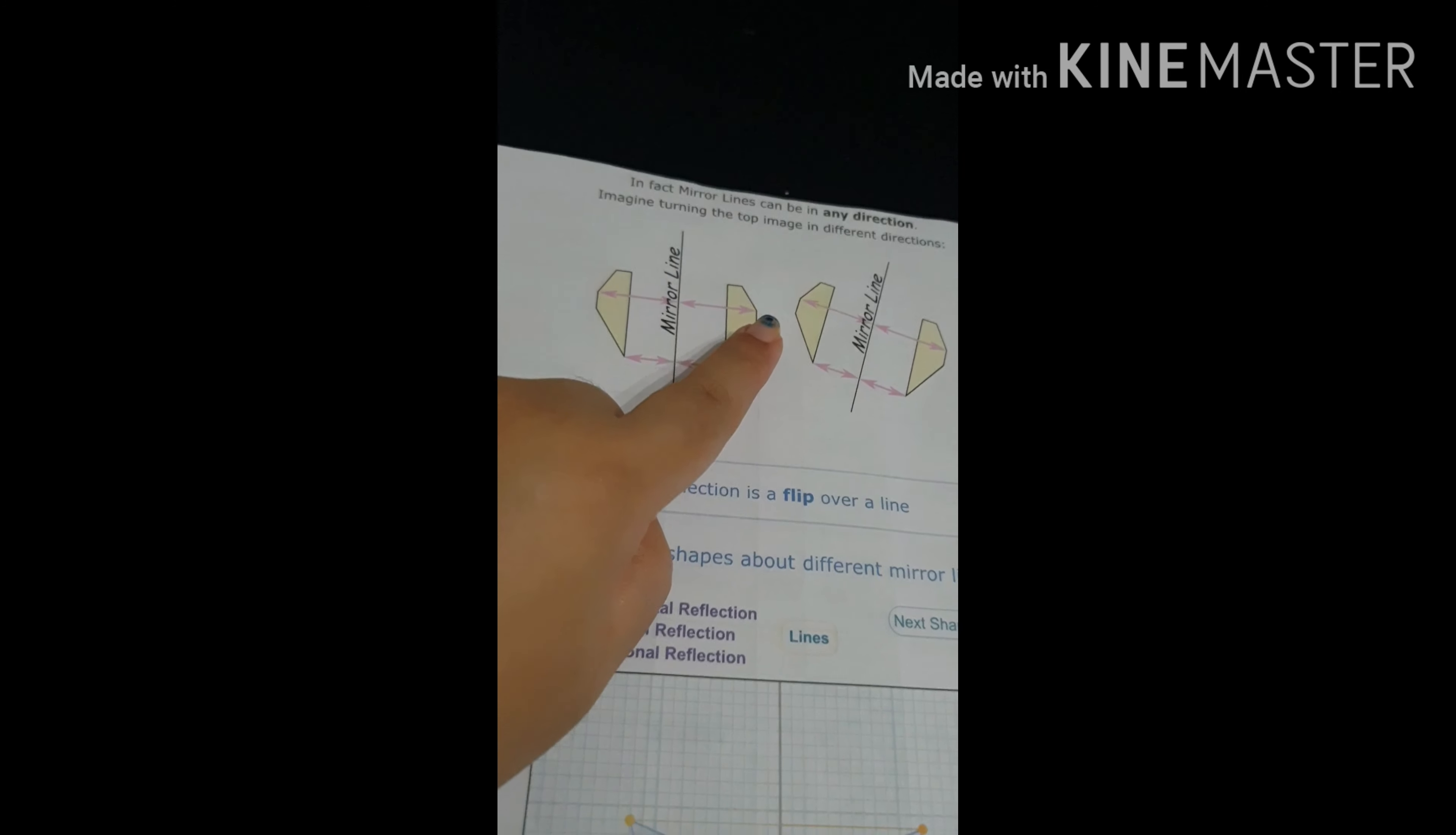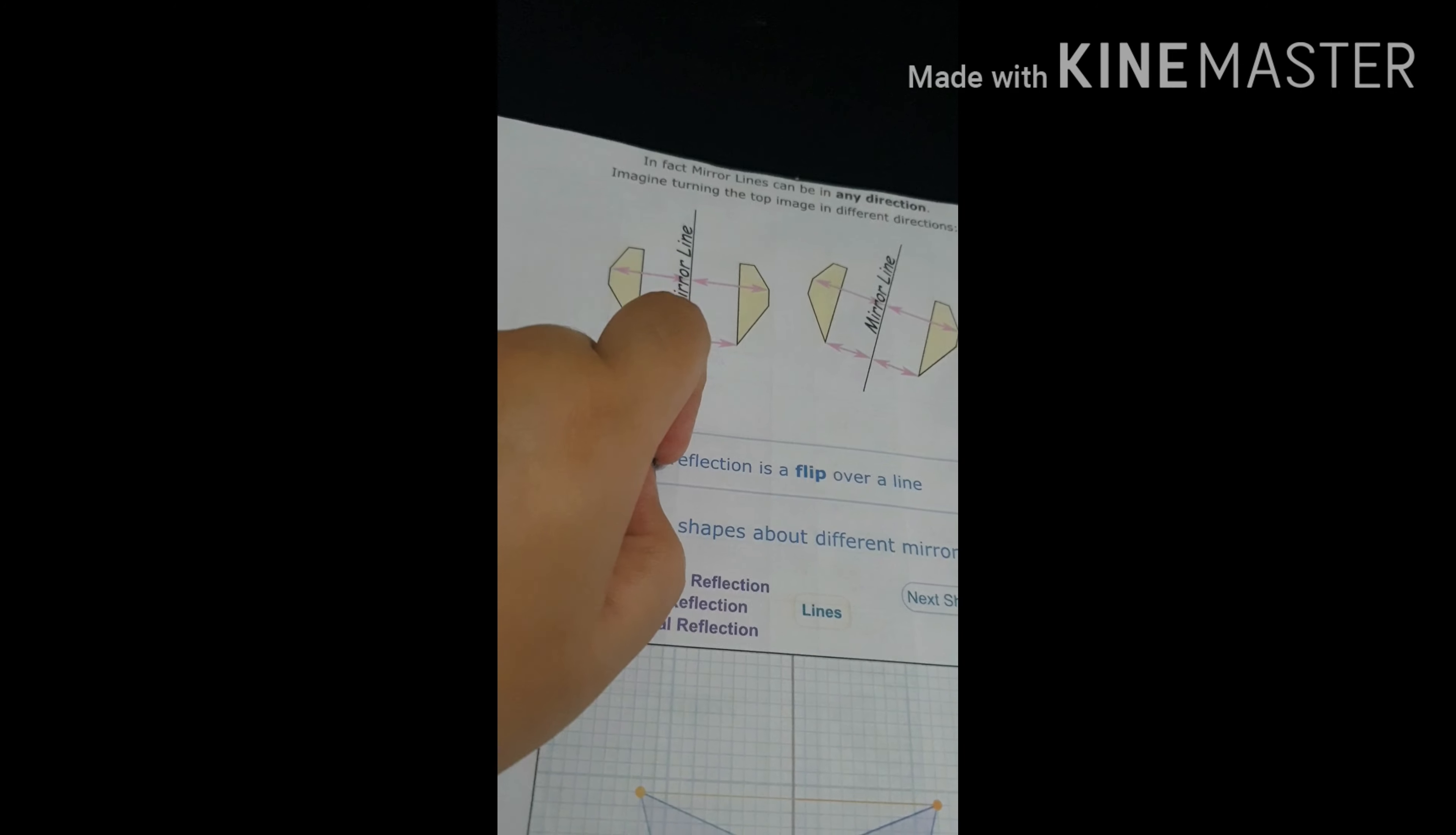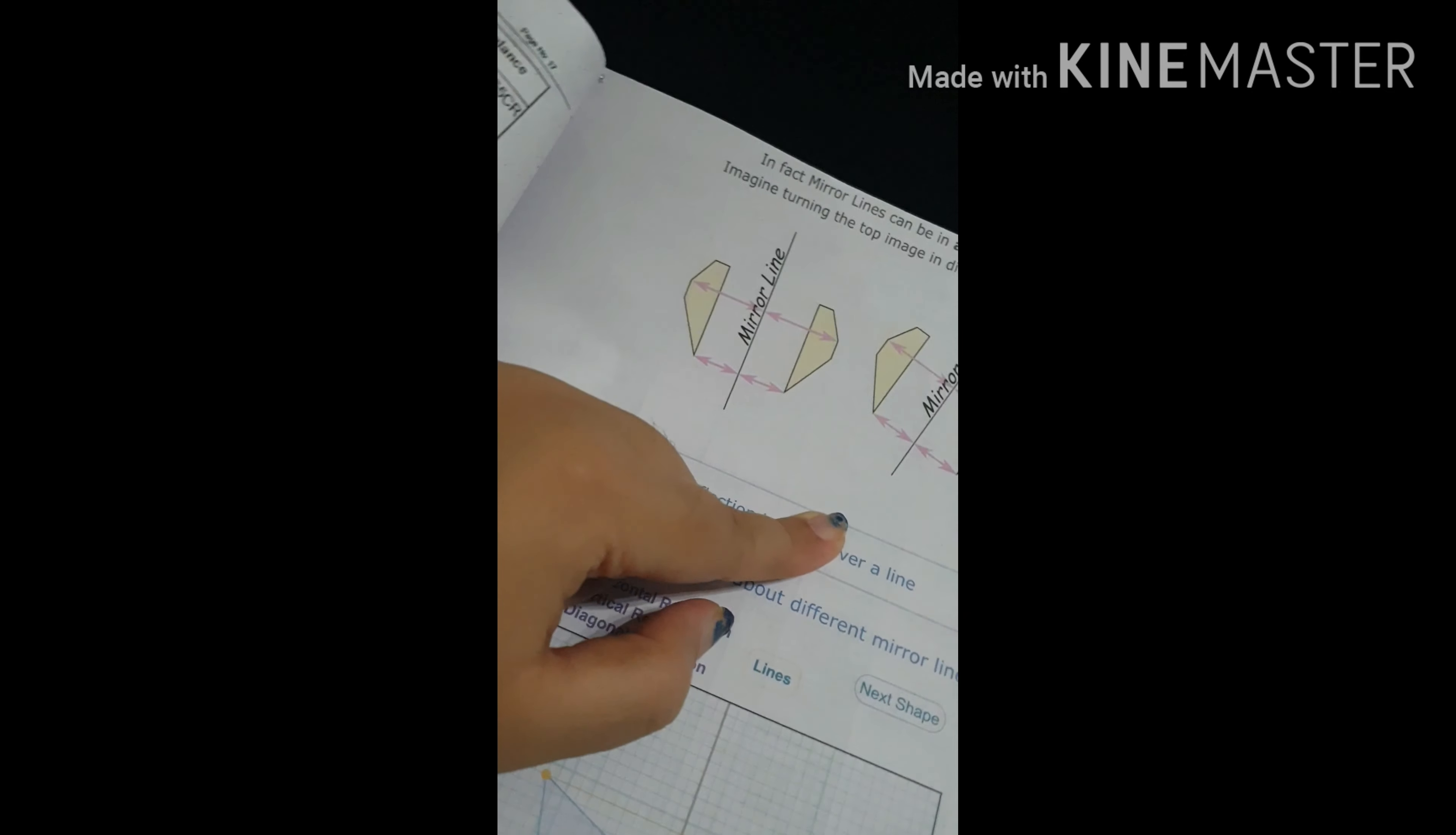In fact, mirror lines can be in any direction. Imagine turning the top image in different directions. Like this, you can see that